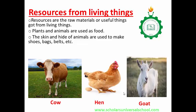Plants and animals are used as food. The skin and hide of animals are used to make shoes, bags, belts, etc. Elephants are hunted down for their tusks. These tusks can be used for decorations. Plants are not only used as food — they can also be used to produce wood, paper, textile, etc. In this module, resources from plants and animals and the importance of these resources to self and society will be discussed.